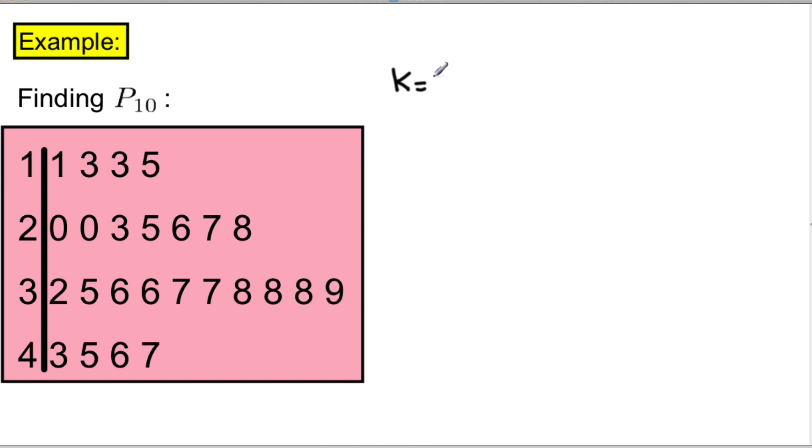Here, k is equal to 10, and the sample size is equal to 25. So, the location will be 10 over 100 times 25. Once we simplify that, we get 2.5.